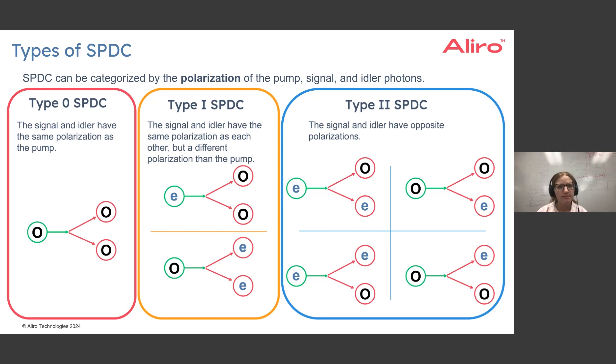We'd also have Type 1 spontaneous parametric down conversion where our signal and idler have the same polarization as each other but a different polarization than the pump. You could have an extraordinary polarized pump which produces ordinary polarized signal and ordinary polarized idler, or of course the reverse situation.